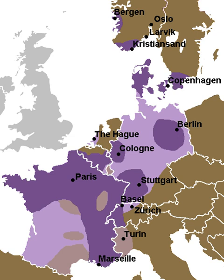The uvular trill is a type of consonantal sound used in some spoken languages. The symbol in the International Phonetic Alphabet that represents this sound is a small capital letter R. This consonant is one of several collectively called guttural R.